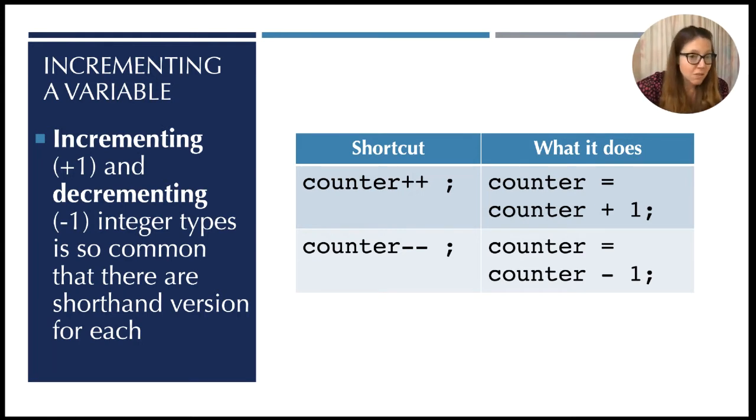One of the most common things that you will do is incrementing a variable by one or decrementing a variable by one - that is taking a variable, adding one to it, or taking a variable and subtracting one from it. It's so common that there's a shorthand version for each, and you might as well get used to them now because you will use them a lot. The shortcut to adding one, incrementing by one, is to take the variable name and follow it by plus plus. So if we have this integer variable counter, if we type counter plus plus and not forget the semicolon, what that actually does is the same as counter equals counter plus one. Likewise, we can decrement by typing counter minus minus semicolon, and that's the same as counter equals counter minus one - so we take what's in that counter, we subtract one from it.